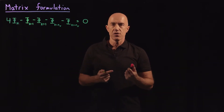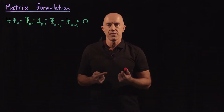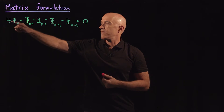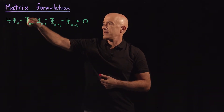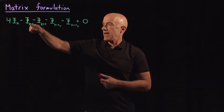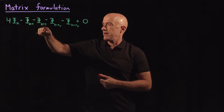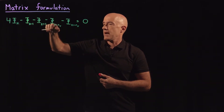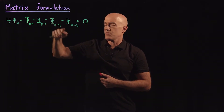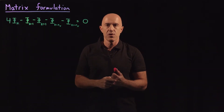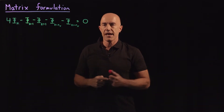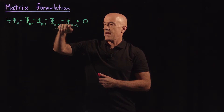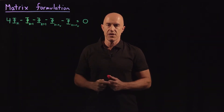Under natural ordering, the discrete Laplace equation became: 4 phi sub k minus phi sub k minus 1 minus phi sub k plus 1 minus phi sub k minus nx, where nx is the number of grid points in the x direction, minus phi sub k plus nx equals 0.